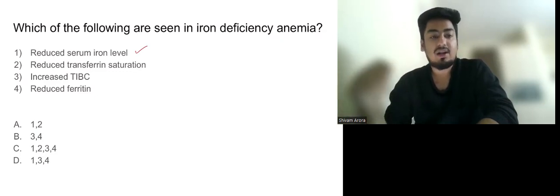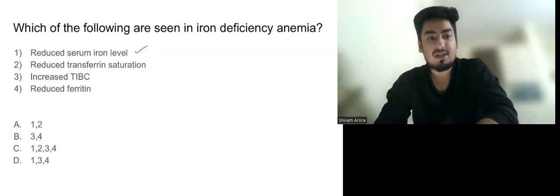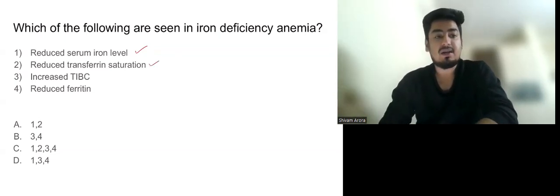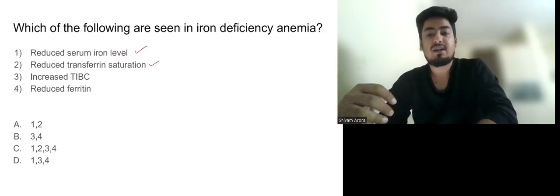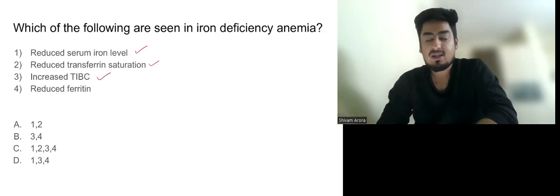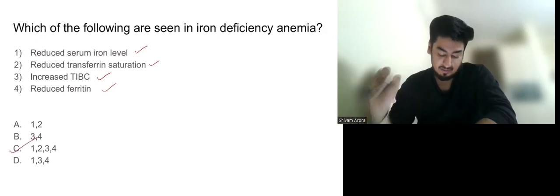In iron deficiency anemia, transferrin and serum iron are both reduced. Serum iron-bound transferrin is low, TIBC is reduced, and ferritin is also reduced since ferritin reflects iron stores. All four options are true, so the answer is one, two, three, and four.